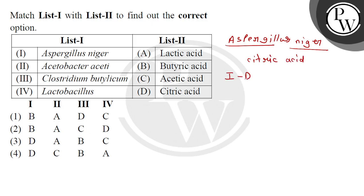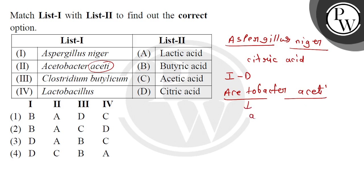Now let's talk about Acetobacter. Acetic acid is coming from the name itself — Acetobacter is a bacteria. If we talk about this, what will it produce? It will produce acetic acid. So our second answer is C.